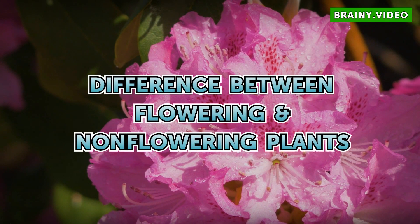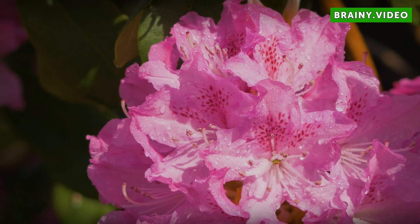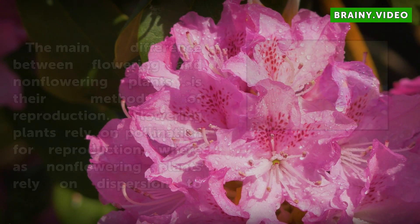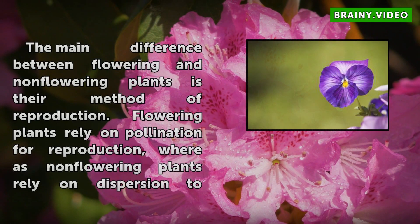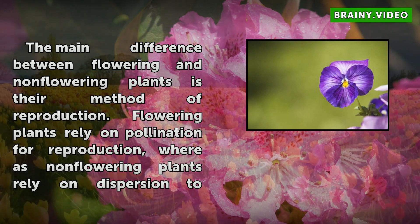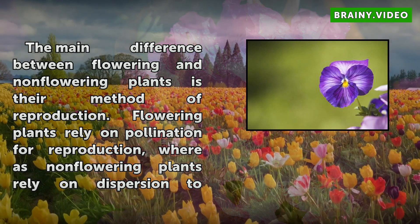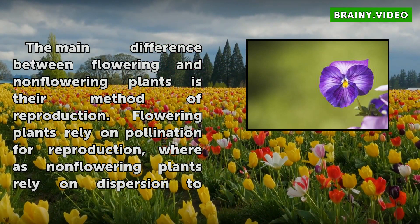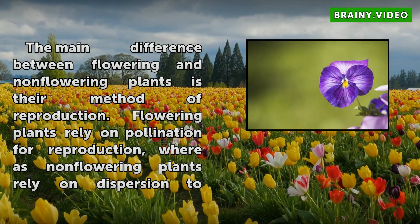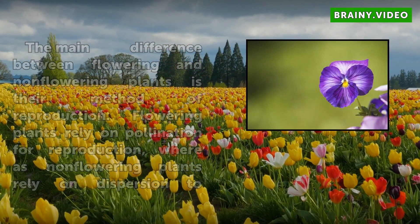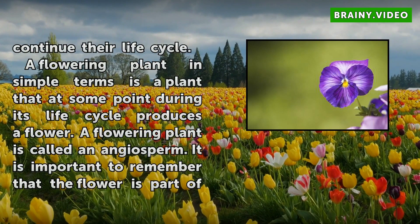The main difference between flowering and non-flowering plants is their method of reproduction. Flowering plants rely on pollination for reproduction, whereas non-flowering plants rely on dispersion to continue their life cycle.